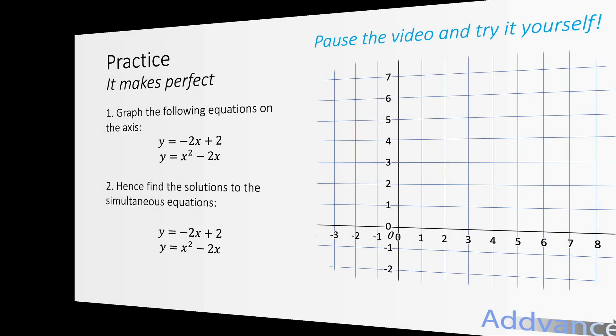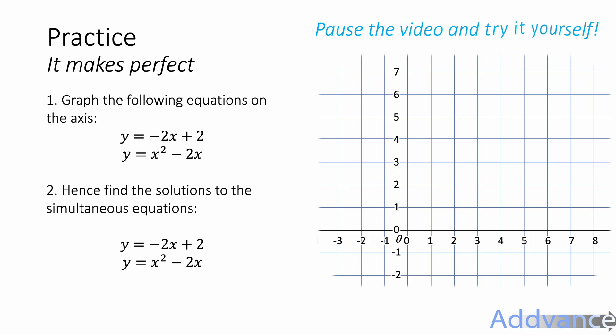I've shown you all the examples from today's video. So I'm going to give you this one to try. Graph the following equations: y equals minus 2x plus 2 and y equals x squared minus 2x. And hence find the solutions to the simultaneous equations. Again, this will just be an estimate. So you can pause the video and try this yourself. I would recommend using graph paper or you could screenshot this screen and draw it over this screen. Pause the video and try this yourself. It should take about five minutes. When you're ready, I'll reveal the answers in 3, 2, 1.